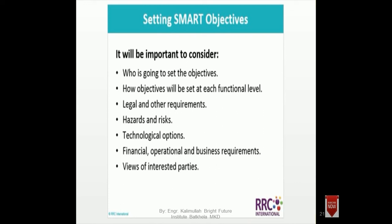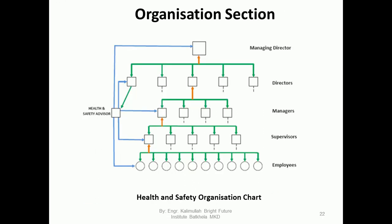Technological options and the different technologies we use — as covered in our previous lecture — must be considered. We need to update the technology. Financial, operational, and business requirements must be achieved. The views of interested and trusted parties must also be considered in setting SMART objectives.